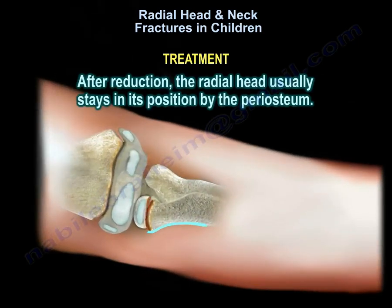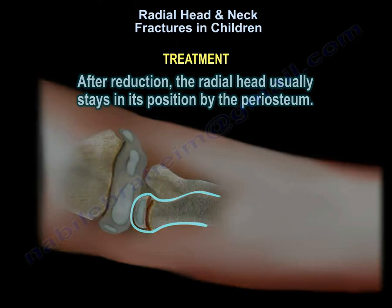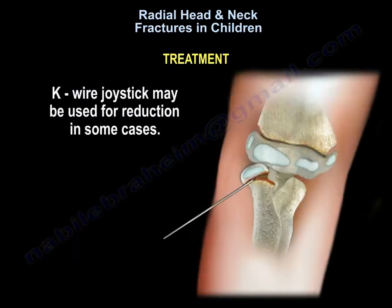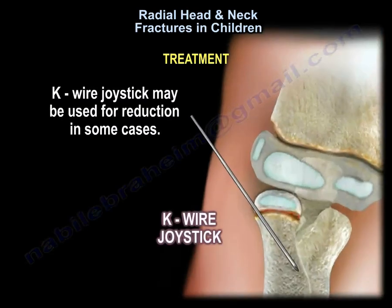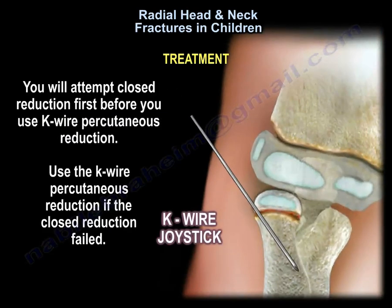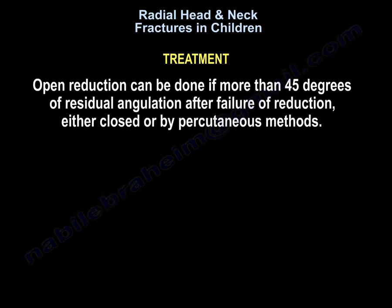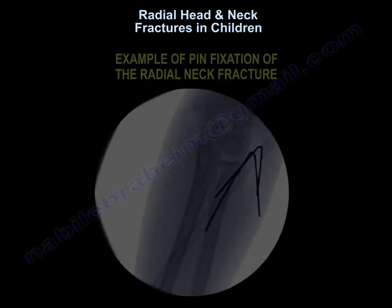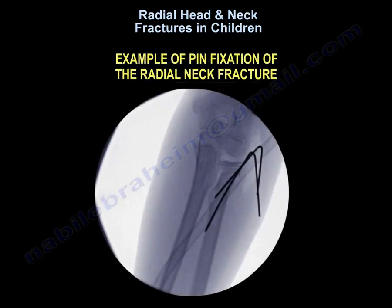After reduction, the radial head usually stays in position held by the periosteum. A K-wire joystick may be used for reduction in some cases. Closed reduction should be attempted first before using K-wire percutaneous reduction; the K-wire approach is used if closed reduction fails. Open reduction can be done if more than 45 degrees of residual angulation remains after failure of closed or percutaneous methods. This is an example of pin fixation of a radial neck fracture.